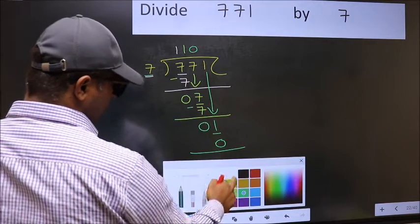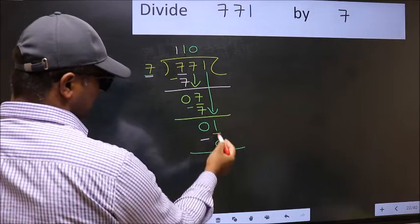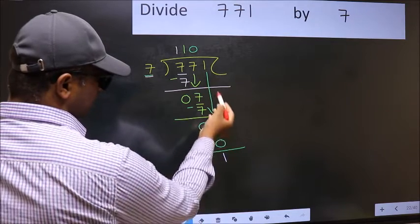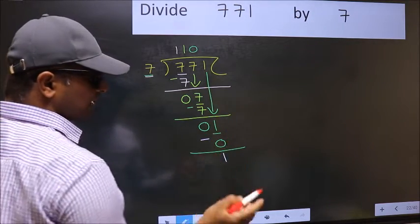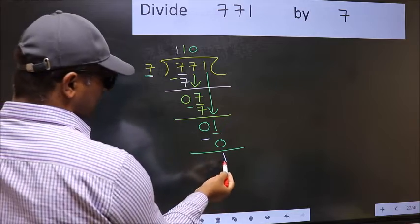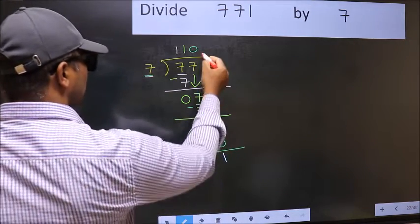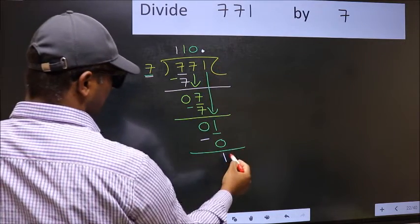Now you should subtract. 1 minus 0 is 1. Over here, we did not bring any number down, and 1 is smaller than 7. So now you can put dot and take 0.